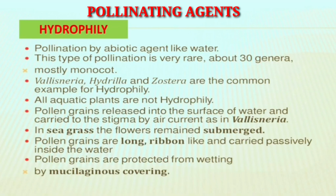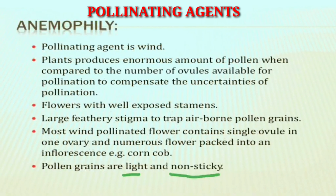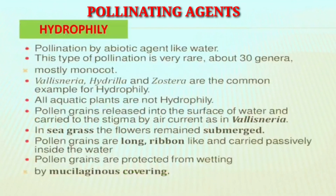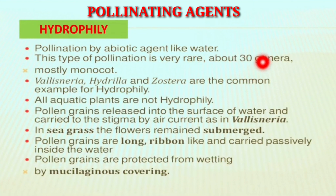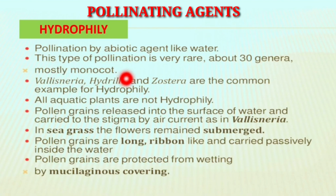The next type of abiotic pollinating agent is hydrophily, where water acts as the pollinating agent. This type of pollination is very rare, but about 30 genera undergo hydrophily. Most of the plants that perform hydrophily are monocot plants. Examples include Vallisneria, Hydrilla, and Zostera. These are common hydrophilous plants.